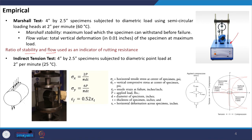Then we have the indirect tension test, which we discussed when we talked about moisture sensitivity. Here we load the specimen along the diametral plane using a rectangular strip element, so the area of loading is small. We provide load on both sides and expect that the material will crack along this plane. Many students ask why we load the specimen in the indirect mode — and we will see later when we measure the resilient modulus we again load the material in indirect tension mode.